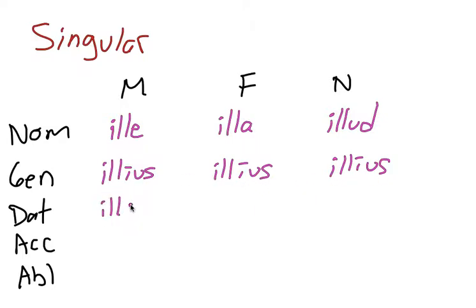And then the dative singular, illi, illi, illi, like a third declension dative singular. That's very common in pronouns to have -ius in genitive singular and -i in dative singular. It's actually called the pronoun declension, so we'll see that in a lot of pronouns that we learn.